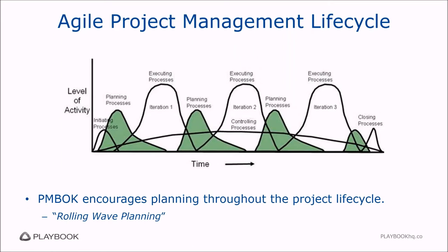Agile project management talks about having iterations — time-boxed periods, usually two to four weeks long. You plan what you're going to do in that iteration shortly before executing, not all up front. You pull from the backlog as you get there: plan, then do, then plan, then do — and it looks like a rolling wave. That's where the term comes from. PMBOK, the Project Management Body of Knowledge, encourages planning throughout the entire project, not just at the beginning.